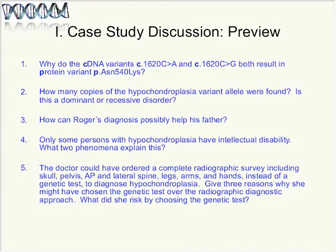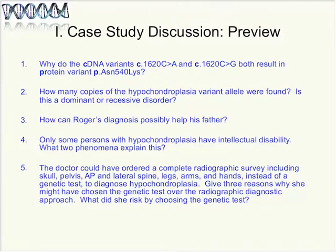The discussion raises several questions to keep in mind as we go forward: Why do the two cDNA variants both result in the same protein variant? How many copies of the hypochondroplasia variant allele were found, and is this a dominant or recessive disorder? How can Roger's diagnosis possibly help his father? Only some persons with hypochondroplasia have intellectual disability — what two phenomena explain this? And why might the doctor have chosen a genetic test over a complete radiographic survey, and what did she risk by doing so?